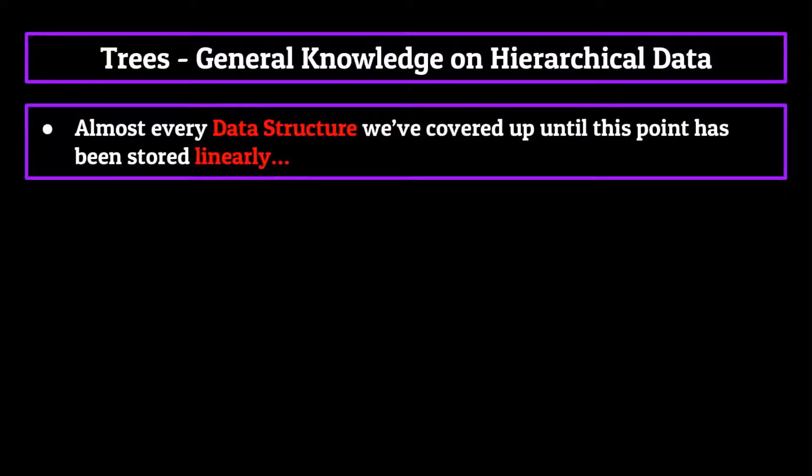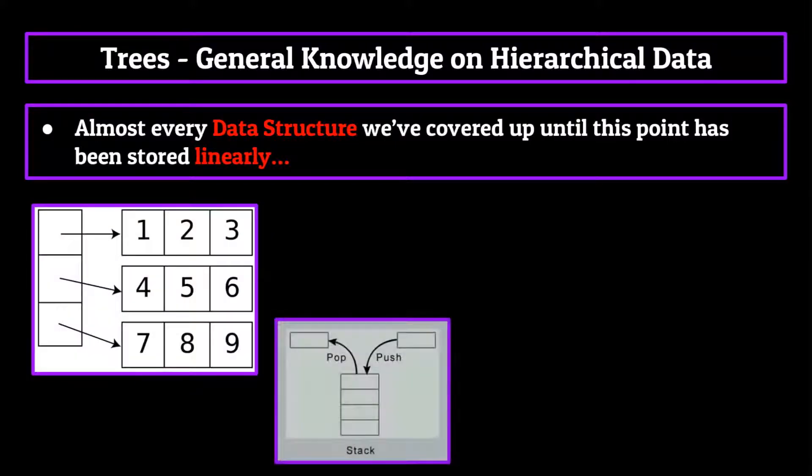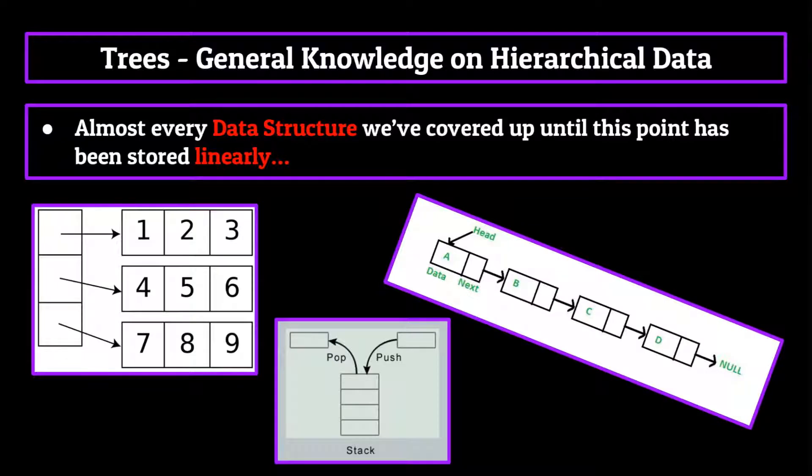Every data structure that we've covered up until this point has been stored linearly: arrays, stacks, linked lists, all of these had a definitive start and end to their data, and you could easily point them out if told to do so. Everything was nice and neat and easy to visualize.